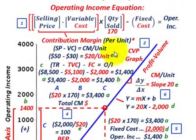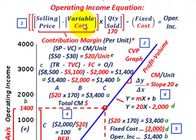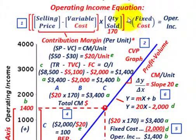Now let's look at our equation and do some numbers, then come back and see how they tie into our graph. For our operating income equation, that's really the selling price on a per-unit basis minus the variable cost per unit. Whatever that difference is, you take that times your quantity sold — in this case 170 units — and then you subtract out your fixed cost. That equals your operating income.